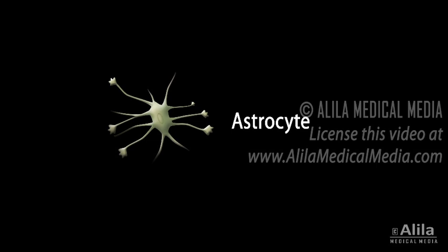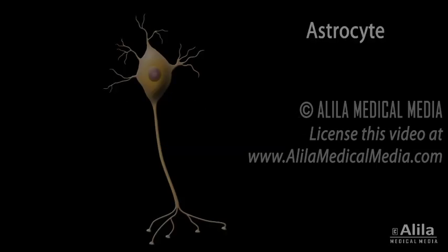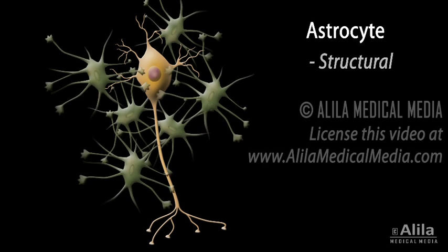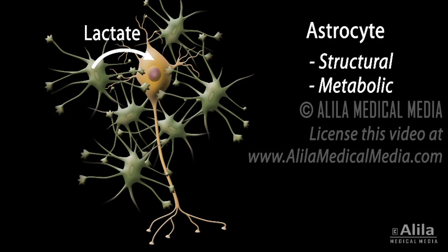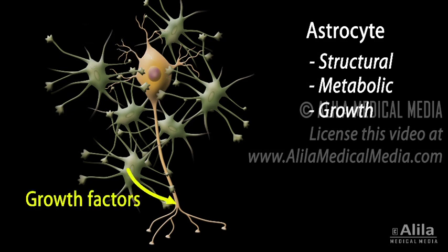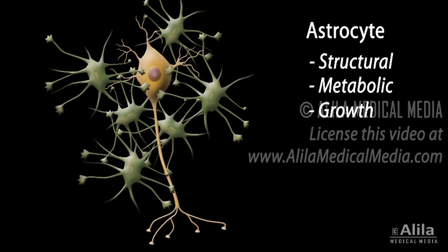Astrocytes are the most abundant and functionally diverse glia. These star-shaped glial cells provide supportive frameworks to hold neurons in place. They provide neurons with nutrients such as lactate, and also produce growth factors that promote neuron growth and synapse formation. It has been suggested that astrocytes can control how a neuron is built by directing where to make synapses or dendrites.